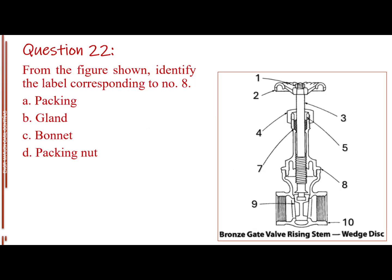Question number 22. From the figure shown, identify the label corresponding to number 8. Letter A, packing. Letter B, gland. Letter C, bonnet. Letter D, packing nap.